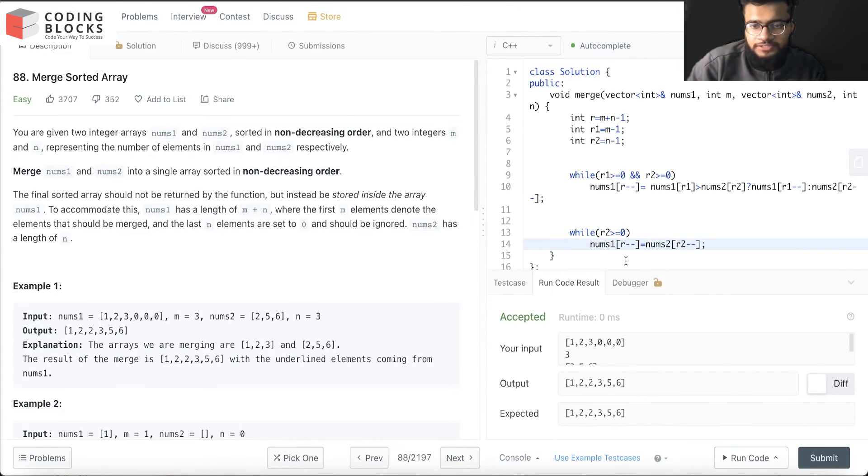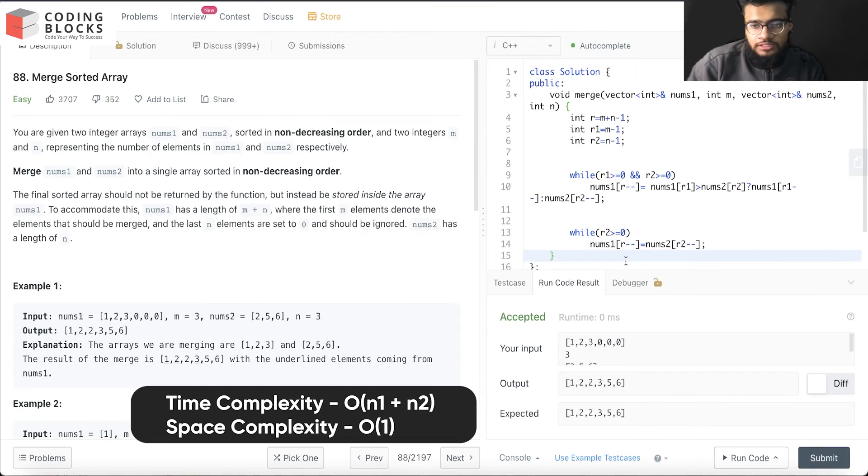The time complexity will be simply O of m plus n, and the space will be constant as we don't have used any other spaces other than the variables that we declared.